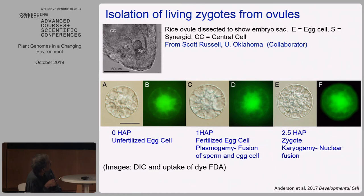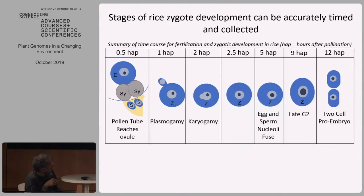The isolation of living zygotes is the work of Scott Russell, our collaborator in Oklahoma. You can isolate living zygotes using uptake of a vital dye, FDA, showing they're alive at zero hours. At one hour after pollination, then 2.5 hours, you can already see structural changes taking place in the zygote within such a short time after fertilization. At about two hours after pollination you get karyogamy — the fusion of the egg and sperm nuclei. By 5 hours, the nucleoli have fused, corresponding to S phase DNA synthesis. Then G2, and finally M phase at 12 hours after pollination: a two-cell embryo.